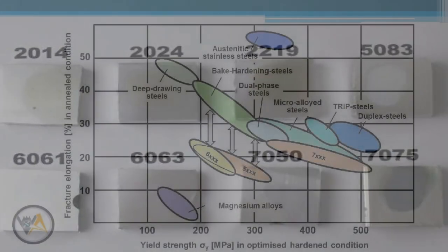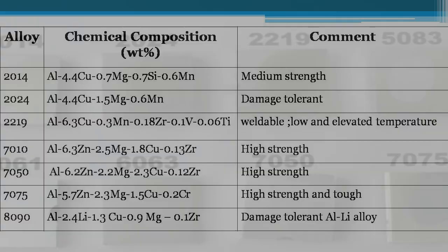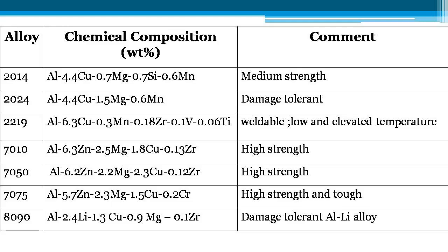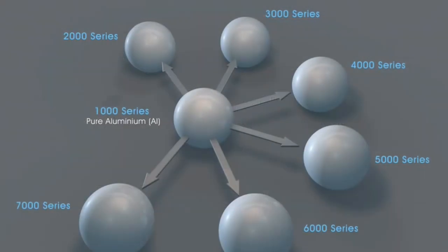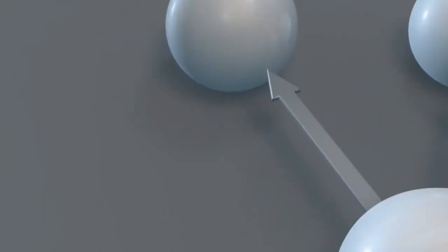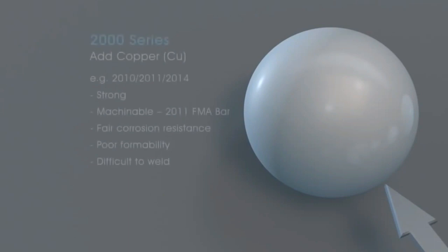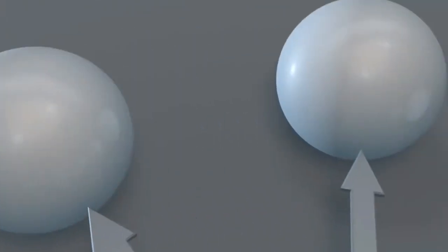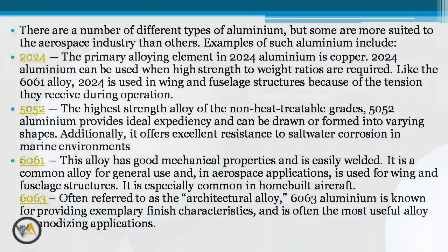There are a number of different types of aluminium alloys, but some are more suitable to the aerospace industries than others. For example, 2024 aluminium — the primary alloying element in 2024 aluminium is copper. 2024 aluminium can be used when high strength-to-weight ratios are required.